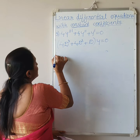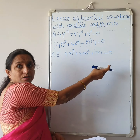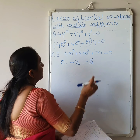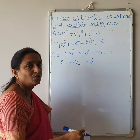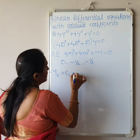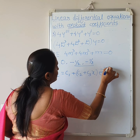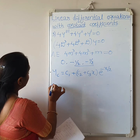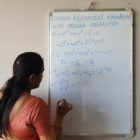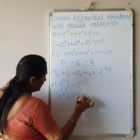Next example: 4y''' plus 4y'' plus y' equals 0. Writing with the operator: (4D³ plus 4D² plus D)y equals 0. The auxiliary equation is 4m³ plus 4m² plus m equals 0. The roots are 0, -1/2, -1/2. There are 3 roots: all real, with two equal. So yc equals c1 plus (c2 plus c3·x)·e^(-x/2).